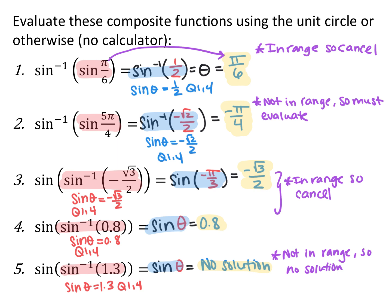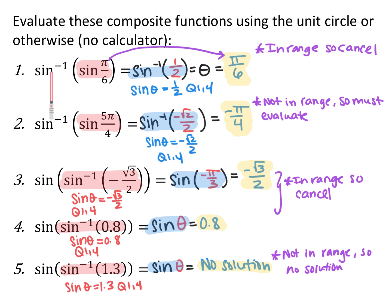For example 2, 5 pi over 4 is not in the range of sine inverse — it's not in quadrants 1 or 4, so it's not a possible answer. We must evaluate from the inside out. Sine of 5 pi over 4 is negative root 2 over 2. Then sine inverse of negative root 2 over 2 asks: what angle in quadrants 1 or 4 gives that ratio? The answer is negative pi over 4. So when the input is in the range of sine inverse, they cancel; when it's not, you must evaluate inside out.